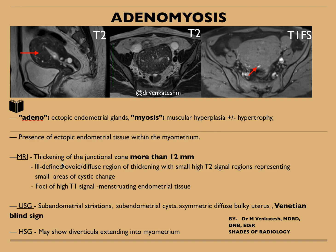On MRI, there will be thickening of the junctional zone. Here you can see the junctional zone is merged along with thickening of the myometrium, which is usually more than 12 mm, with an ill-defined ovoid or diffuse region of thickening. In this case, it is diffuse adenomyosis. Sometimes there may be focal adenomyosis, and the small high T2 signal regions represent small areas of cystic change. The foci of high T1 signal represent menstruating endometrial glands present within the myometrium.